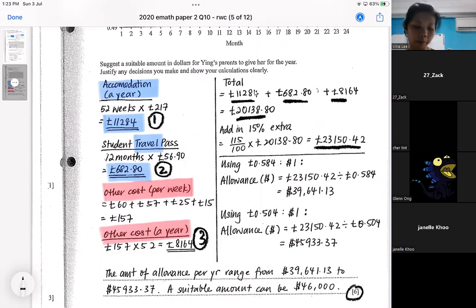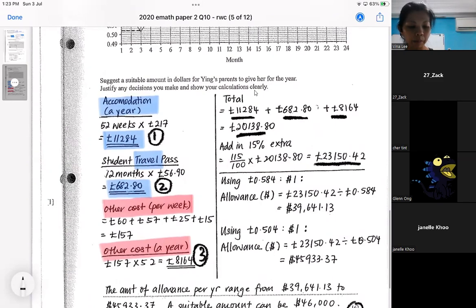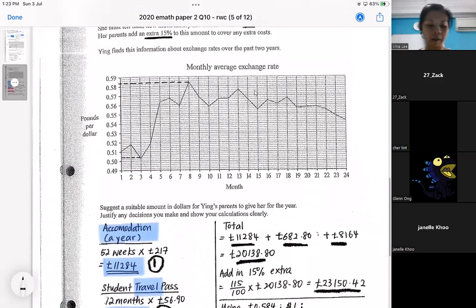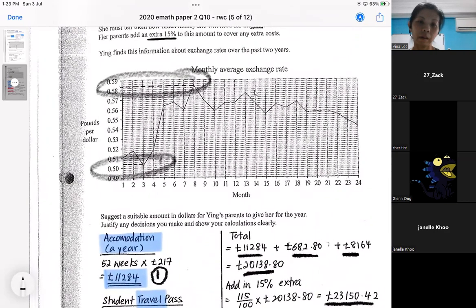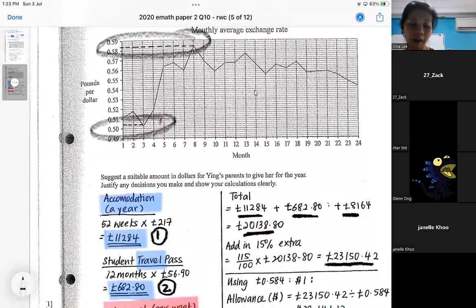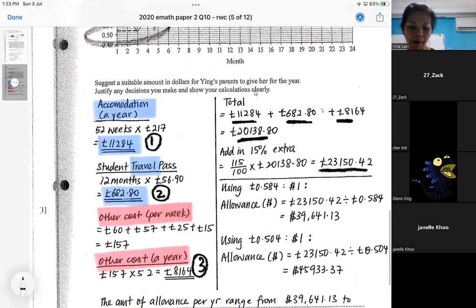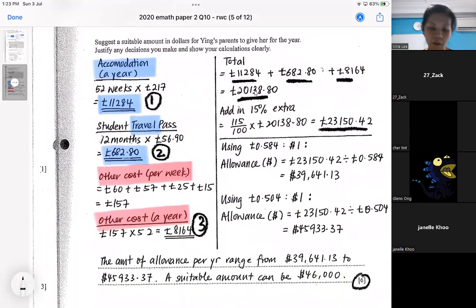It's just that you got to decide the exchange rate. So that is how part two is supposed to help you. So this is your pound conversion. So you go and read the exchange rate, take the highest and the lowest. Just like in part two, you take the highest and the lowest. So you also compare, take the highest and the lowest. So she should be asking her parents any amount between these two. She should be asking her parents any amount between $39,000 to $45,900. So you can suggest a suitable amount. It depends on how you want to decide.